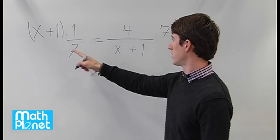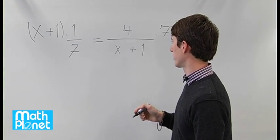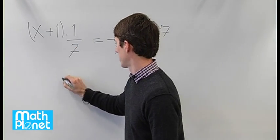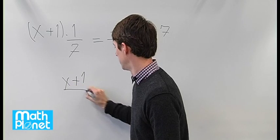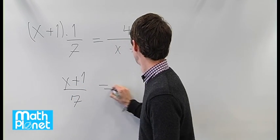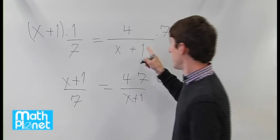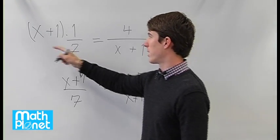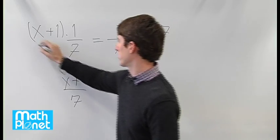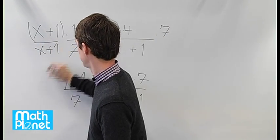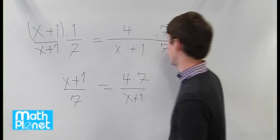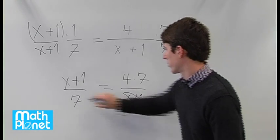This allows us to cancel out our denominators from the previous side. We have to multiply by x+1 on the denominator as well, and 7 on the denominator here. So that allows us to cancel these.